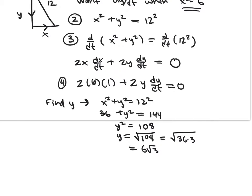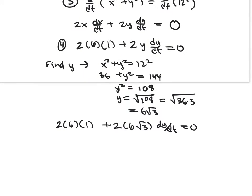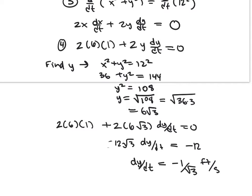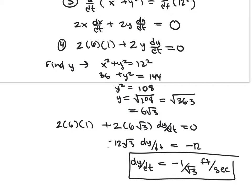Now plug that in: 2 times 6 times 1 plus 2 times 6 root 3 times dy/dt equals 0. First subtract 12: 12 root 3 dy/dt equals negative 12. So dy/dt equals negative 1 over root 3 feet per second. Does that make sense in context? As the ladder goes away from the wall, its height on the wall decreases — that's why this number came out negative, as it should.